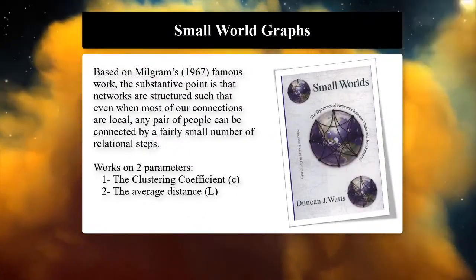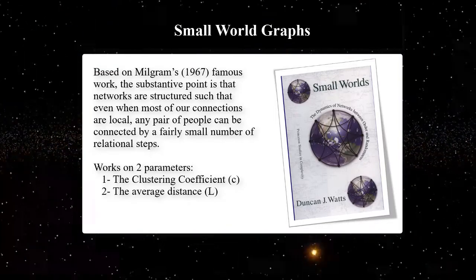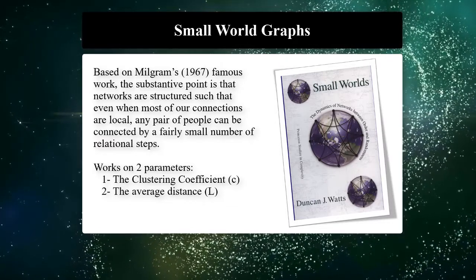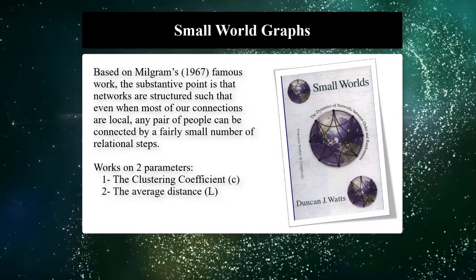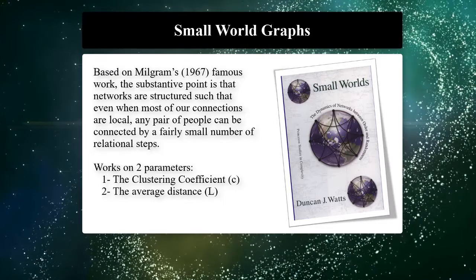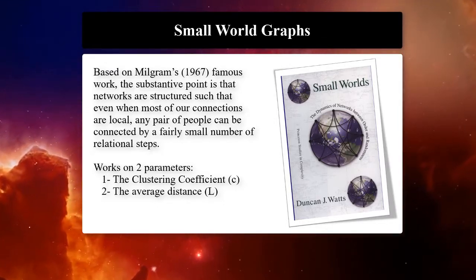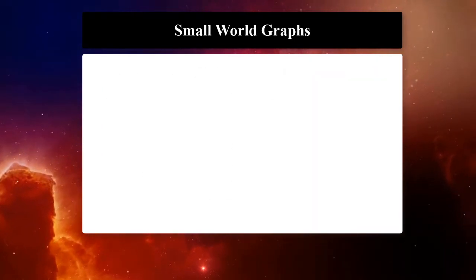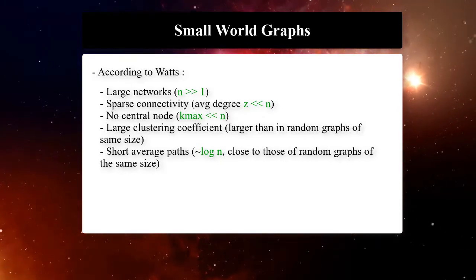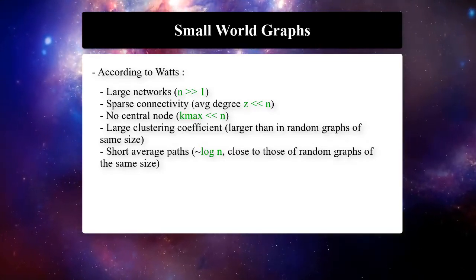Small-world graphs are based on Milgram's famous work in 1967. The substantive point is that networks are structured such that even when most of the connections are local, any pair of nodes can be connected by a small number of intermediate steps. It works on two parameters: the clustering coefficient and the average distance separating nodes in the network, denoted by L. In a highly clustered ordered network, a single random connection will create a shortcut that decreases L, the average distance between nodes, dramatically.